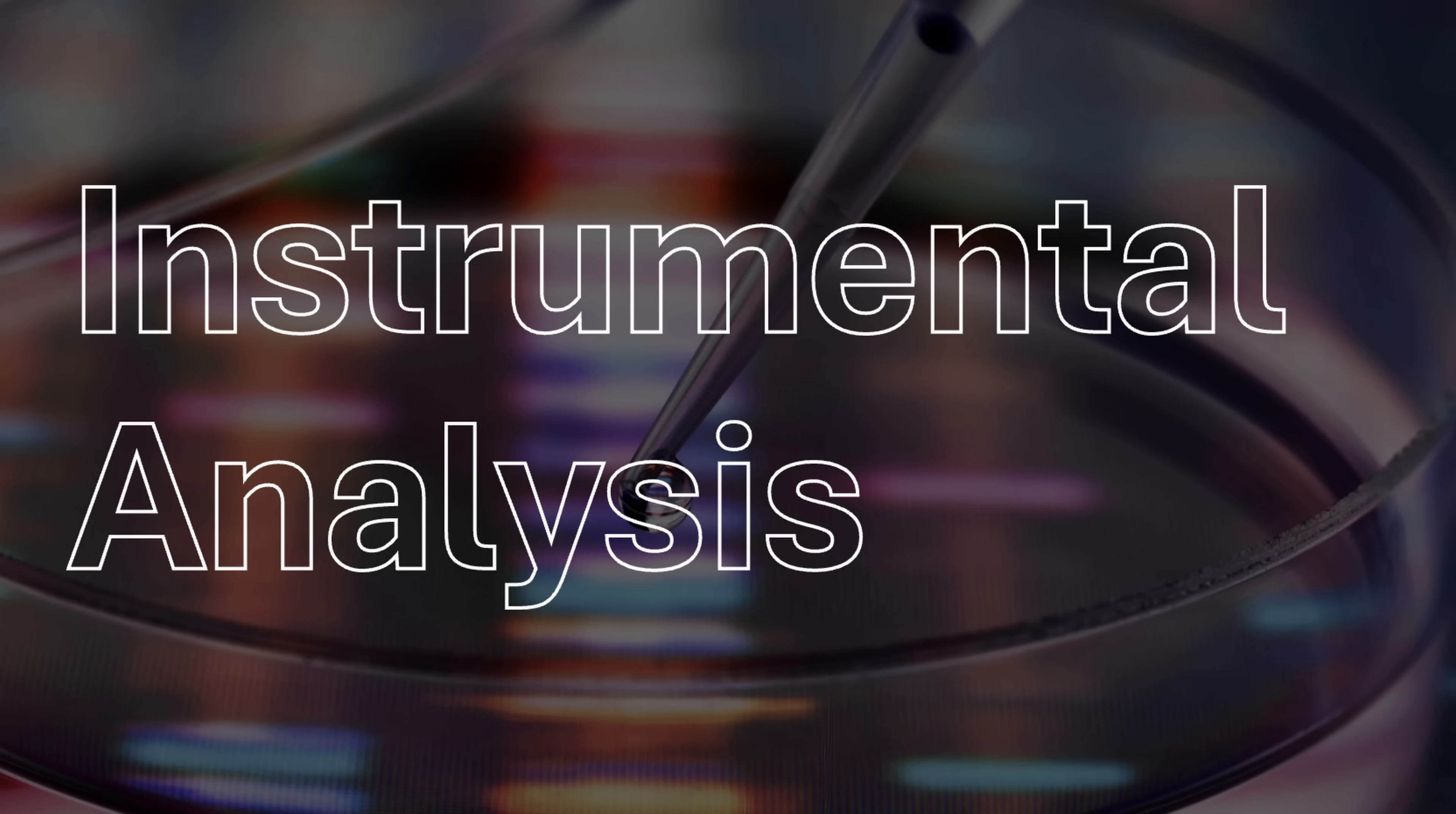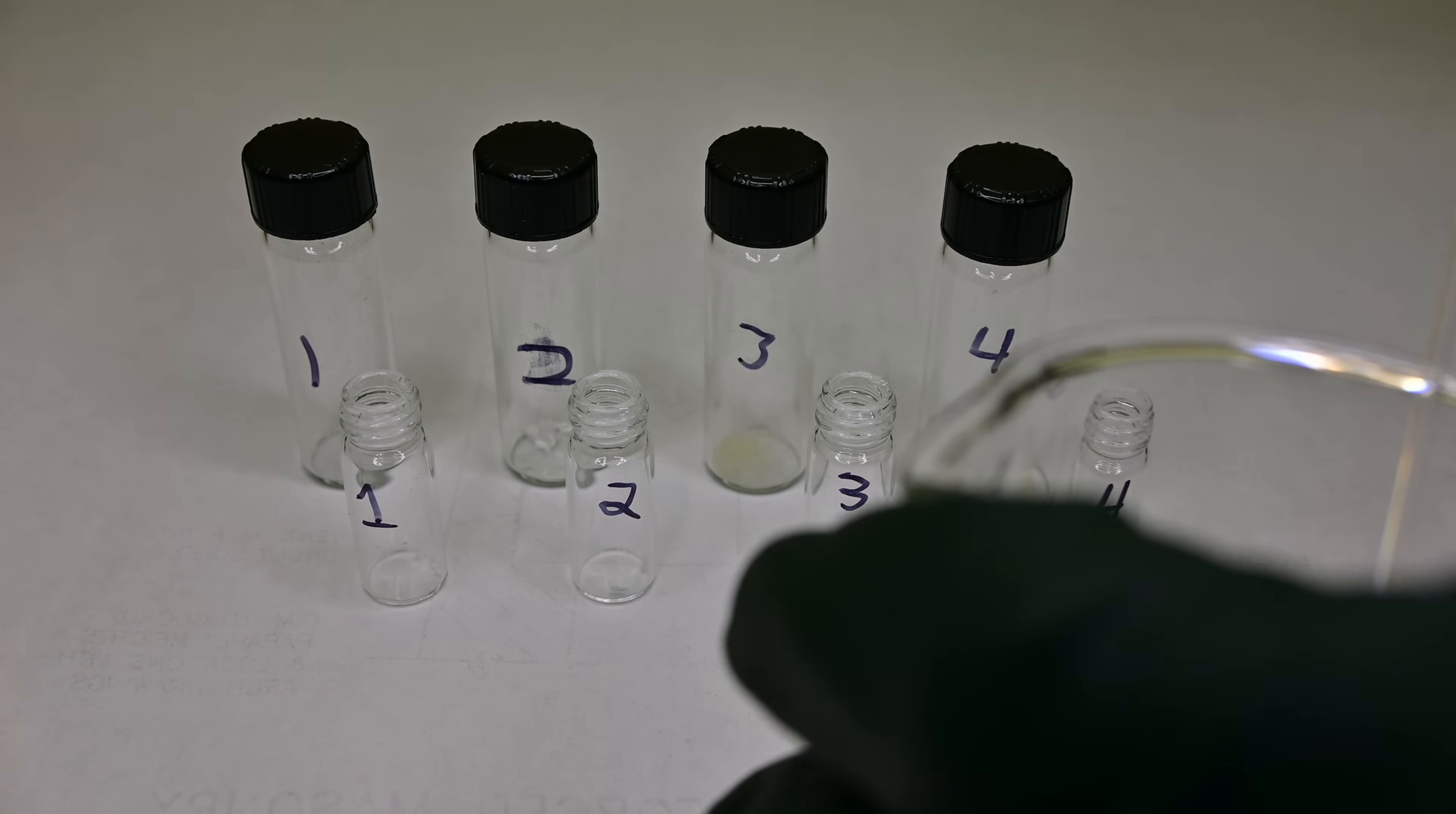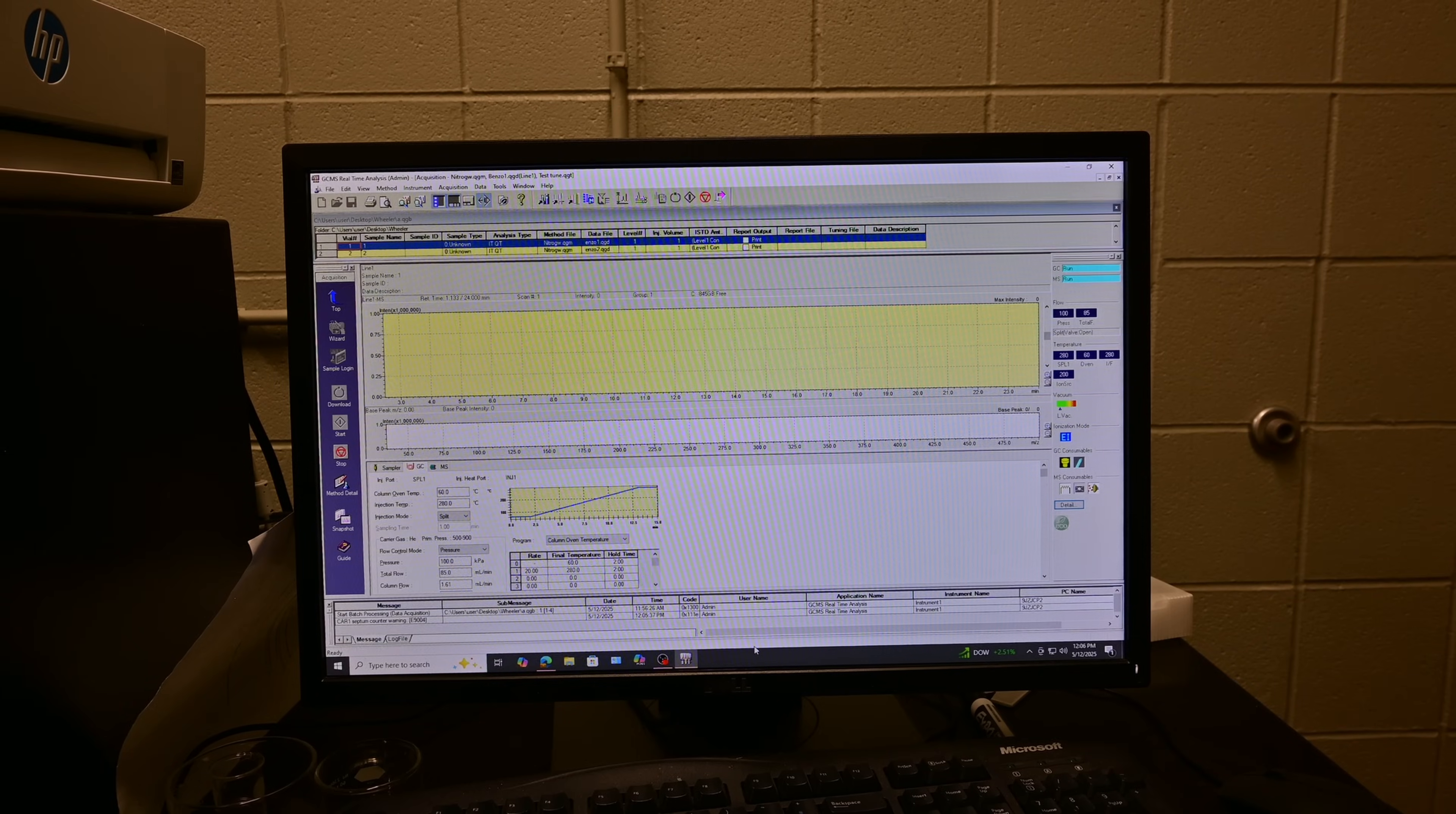Now for my favorite part. Confirming that I've actually synthesized what I'm claiming to synthesize. Instrumental analysis. I save small samples from each of the syntheses for this purpose. Now we're going to run GCMS to verify their identity. I transfer small amounts of each material into a GCMS vial. Then I add dichloromethane to the vials. These vials were then loaded into the auto sampler and ran. Each sample takes around 16 minutes to run, so through the power of editing I jump ahead to when all the samples are done.